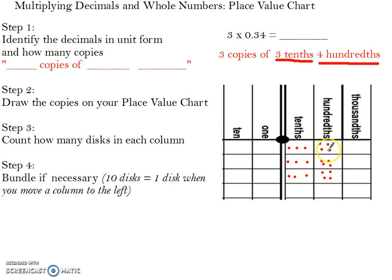1, 2, 3, 4, 5, 6, 7, 8, 9, 10, 11, 12. I have a group of 10, so I know that I need to bundle. So I'm going to draw my circle around 10, and I know that this 10, when I move to the column to the left, creates 1 tenth. Now I can count how many I have left, and that is 2.